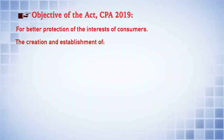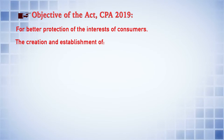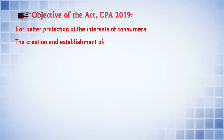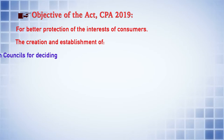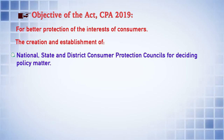Primarily, the Act aims for the betterment of the interest of the consumers. The primary objective is to protect the interest of consumers in all aspects, and for this purpose the law provided for creation and establishment of various institutional mechanisms. These are known as National, State, and District Consumer Protection Councils for deciding policy matters.